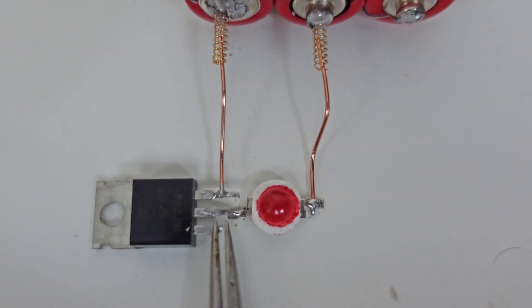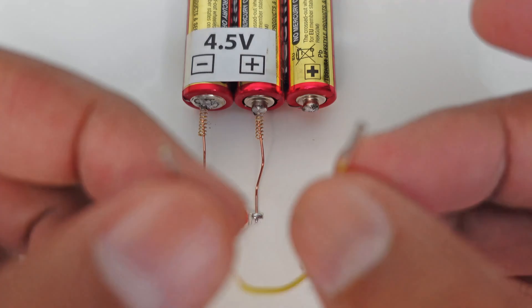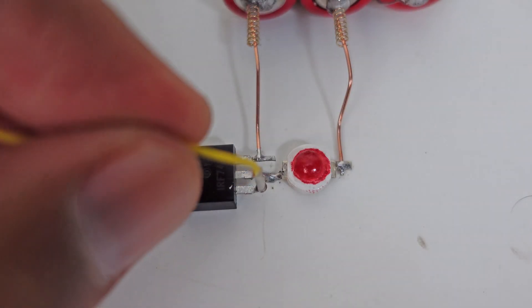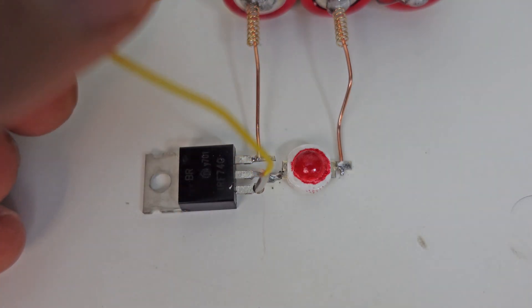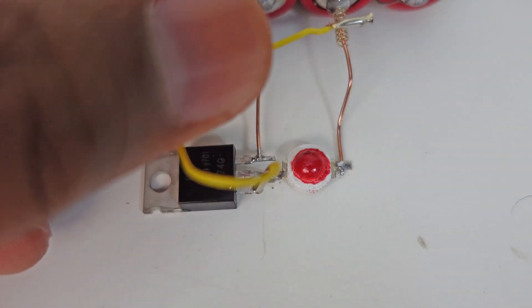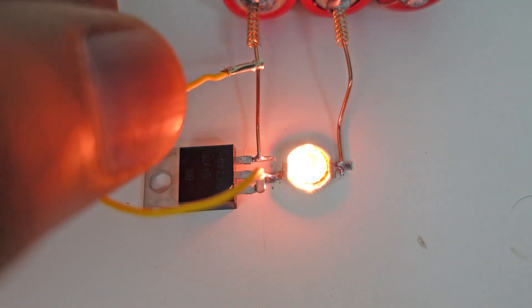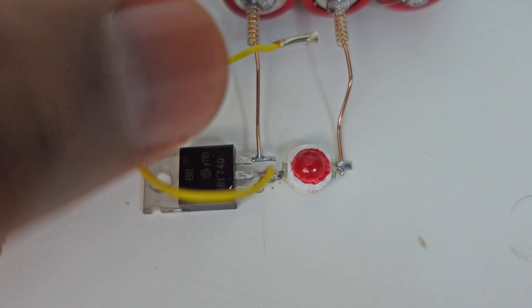This is the gate of the MOSFET transistor. This is a small wire we have. We connect this wire from one side to the gate of MOSFET. And on the other hand, as soon as we connect it to battery positive, the light turns on. And as soon as we connect it to the negative, the light turns off.